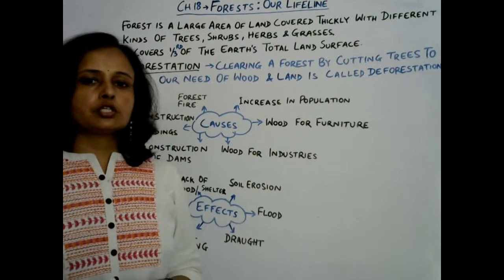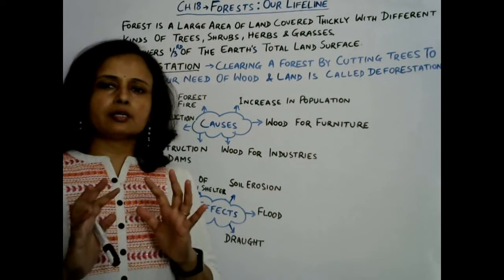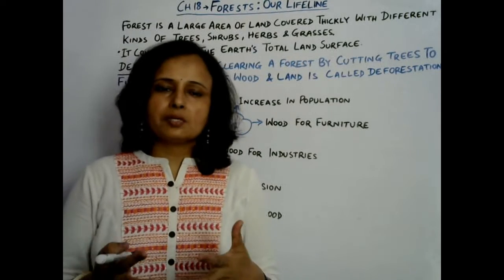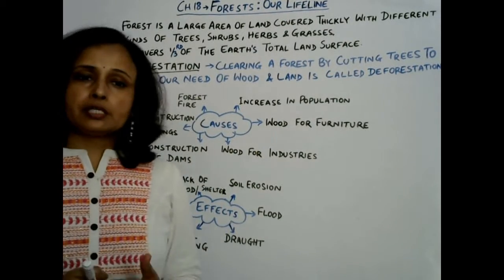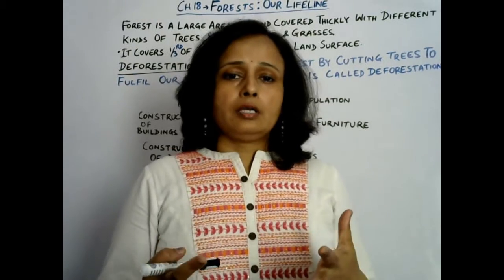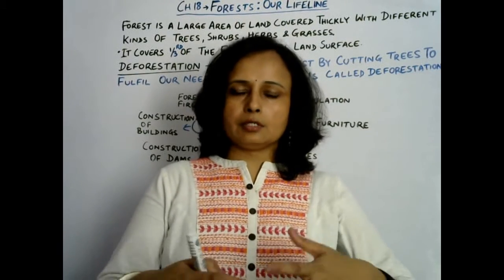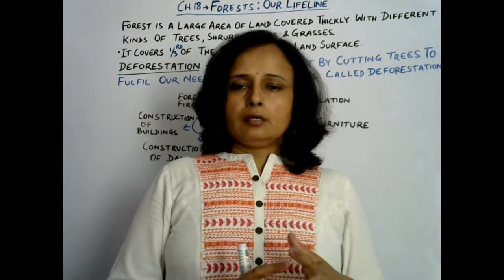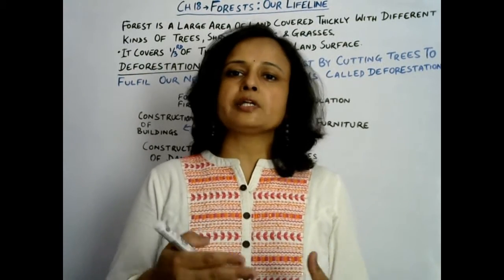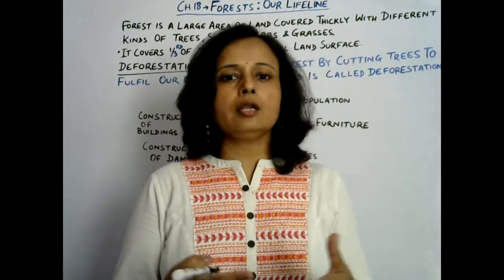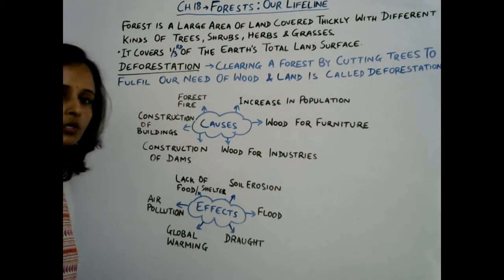Next is drought. Now, flood and drought are opposite situations, and you must be thinking how both can happen. Drought is basically a lack of rain — due to lack of rain, the land becomes dry and cracked. So what is the role of plants here? Plants release water vapor, which plays a role in precipitation. Rainfall is influenced by water vapor, and in the absence of plants, there may be a situation of drought.